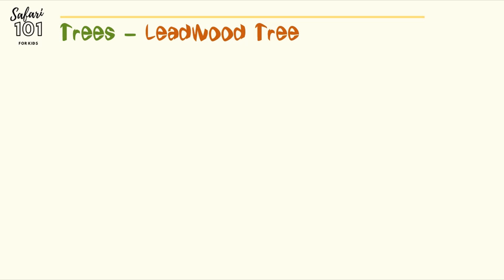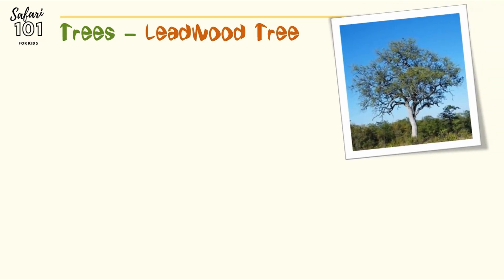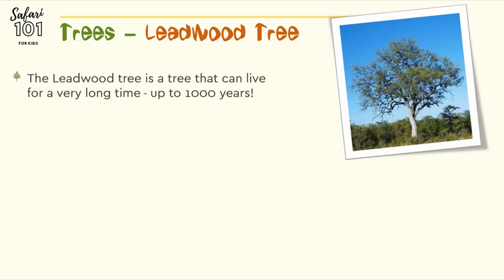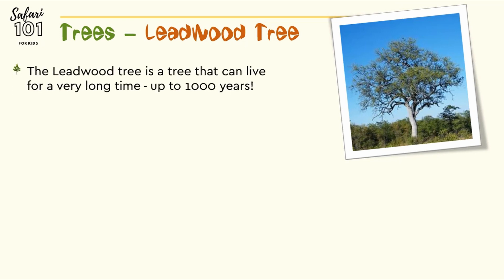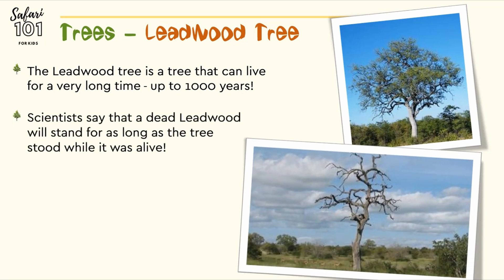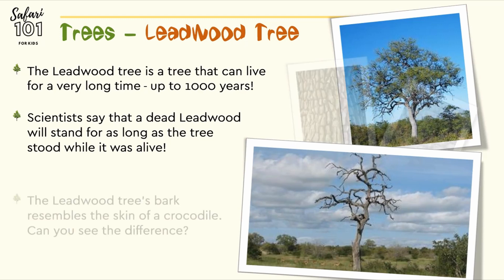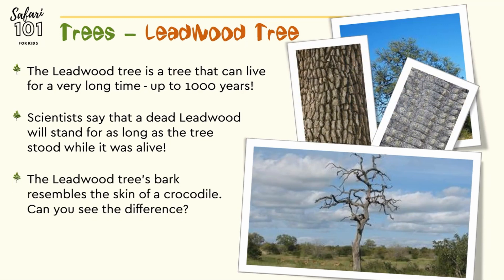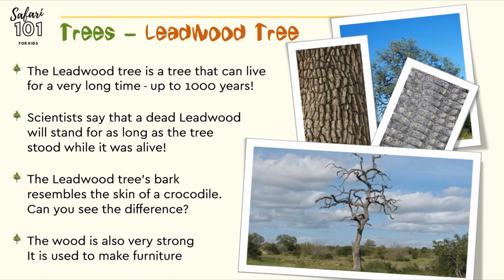Let's discuss some of the trees we find in Southern Africa. The leadwood tree is a tree that lives for a very long time — scientists estimate well over a thousand years. Scientists also say that the dead tree in the bottom picture will stand for as long as the tree stood while it was alive, so if it was alive for a thousand years, it will be dead for a thousand years as well. Leadwood tree bark resembles the skin of a crocodile — can you see the difference in the two pictures to the right? The wood is also very strong and people make furniture from it.